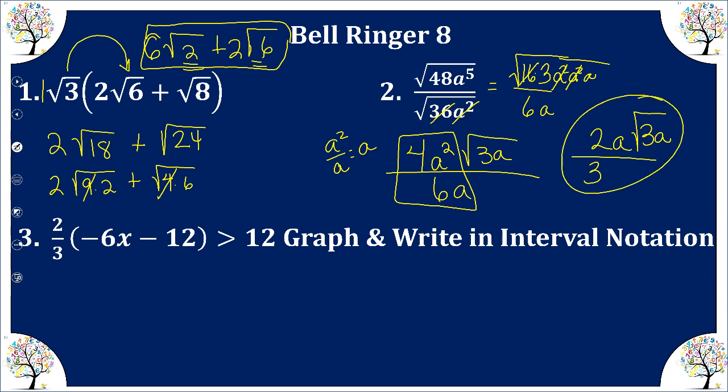We're going to solve this inequality, graph it, and write it in interval notation. We're going to distribute 2 thirds. So 3 goes into negative 6x, negative 2x times, times 2. So that's negative 4x.